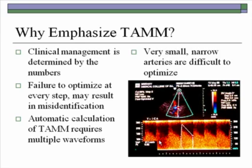Why emphasize TAM? Clinical management is determined by the numbers. Failure to optimize at every step may result in misidentification of vessels or failure to identify the highest velocity. Once you find an abnormal signal, you need to spend a great deal of time optimizing it and capturing several waveforms to use the highest velocity and strongest signal to make your decision. It's not just about peaks and means — it's about the quality of the signal as well, because in high flow states and distal to high flow states you have damping of the waveform and turbulent flow, and all this information is very helpful.